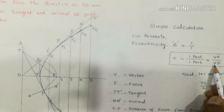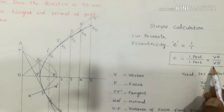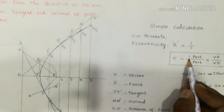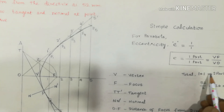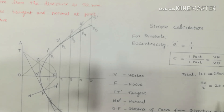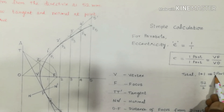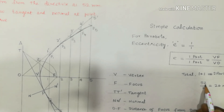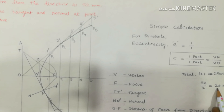For ellipse and hyperbola, the eccentricity value will be given in the question paper. Next, add the numerator and denominator values: 1 plus 1 equals 2 parts total. The distance of focus from the directrix is 52 mm, so 52 divided by the total number of parts (2) gives 26 mm per part.